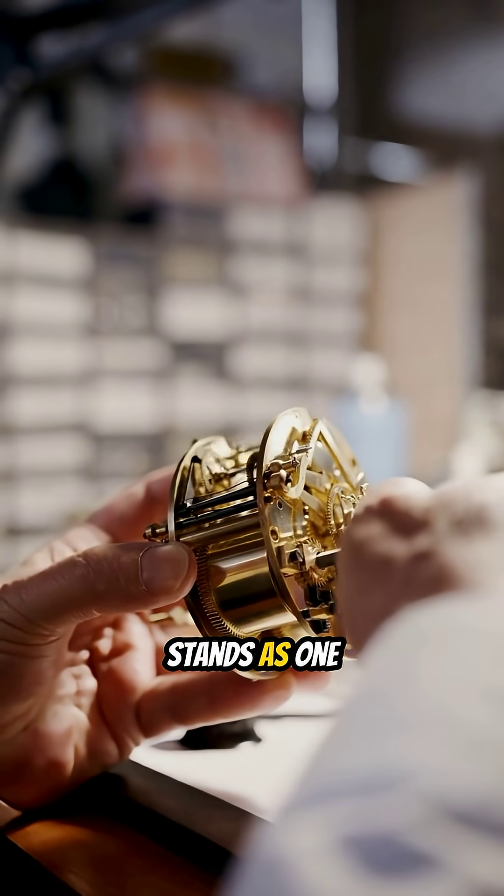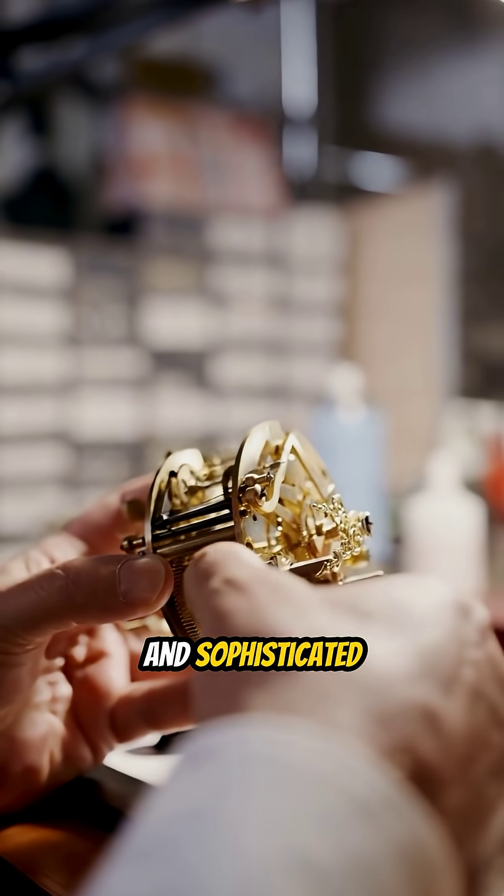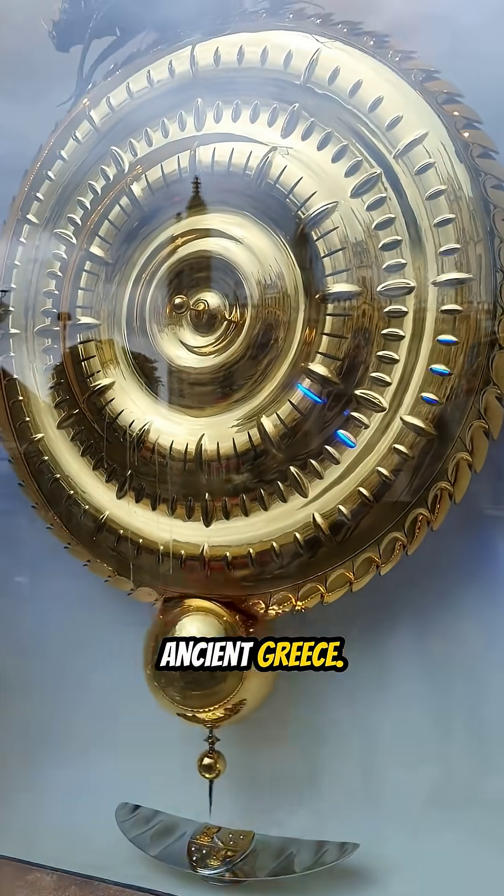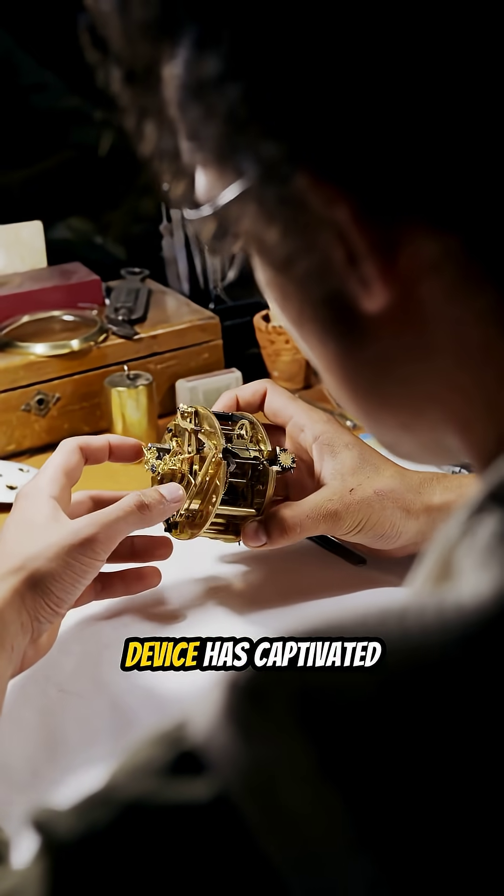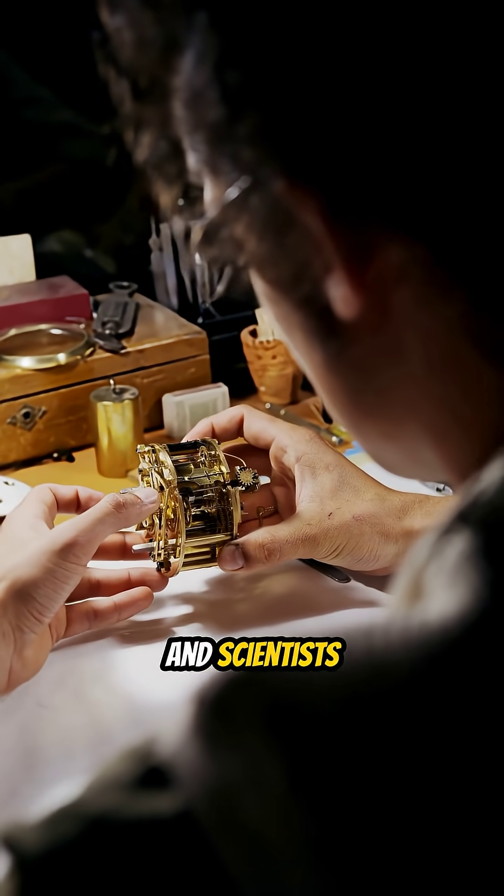The Antikythera mechanism stands as one of the most enigmatic and sophisticated artifacts from ancient Greece. Discovered over a century ago within the remains of a shipwreck off the coast of the island of Antikythera, this device has captivated historians and scientists alike.